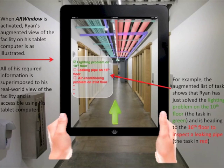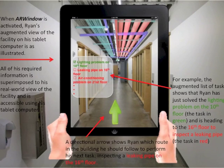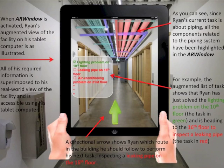All of his required information is superimposed on his real-world view of the facility and is accessible using his tablet computer. For example, the augmented list of tasks shows that Ryan has just solved the lighting problem on the 10th floor — the task in green — and is heading to the 16th floor to inspect the leaking pipe, the task in red. A directional arrow shows Ryan which route in the building he should follow to perform his next task. Since Ryan's current task is about piping, all components related to the piping system have been highlighted in the AR window.